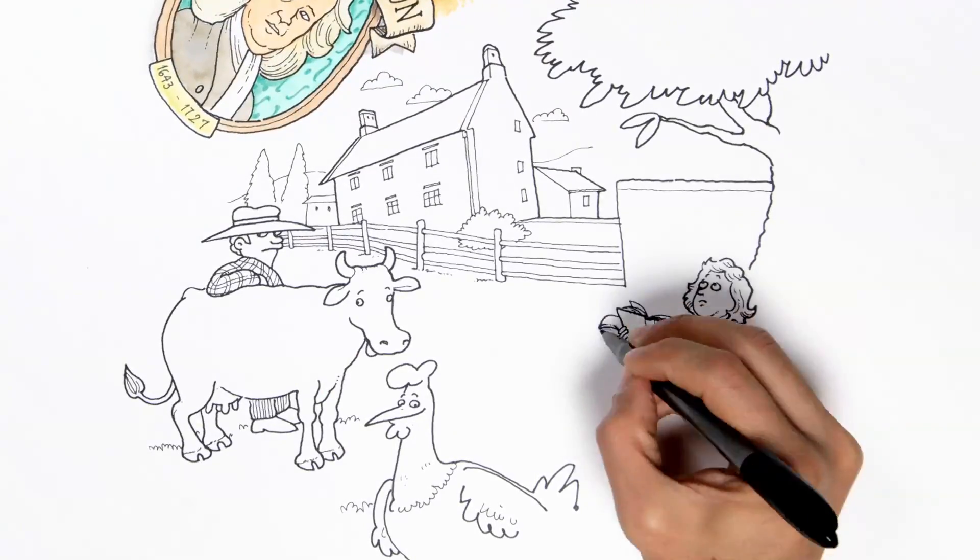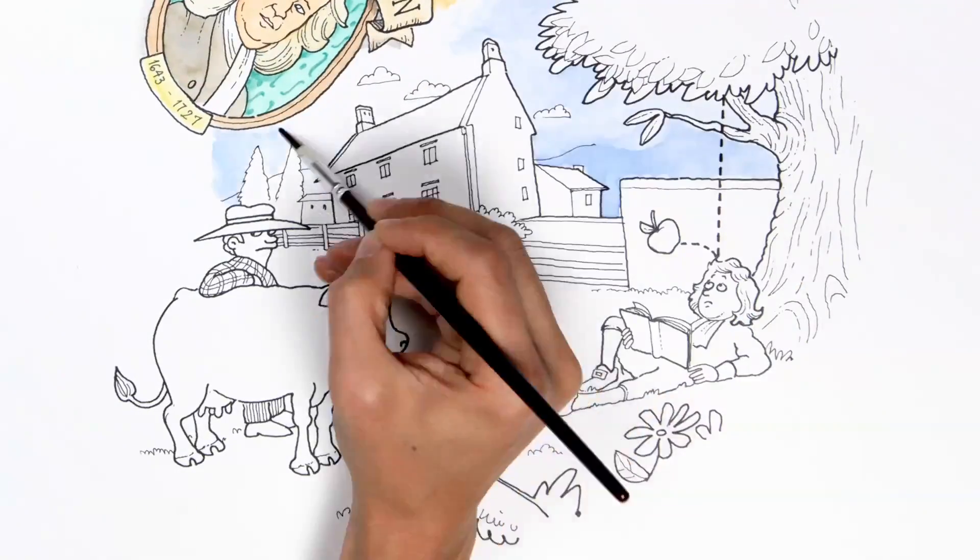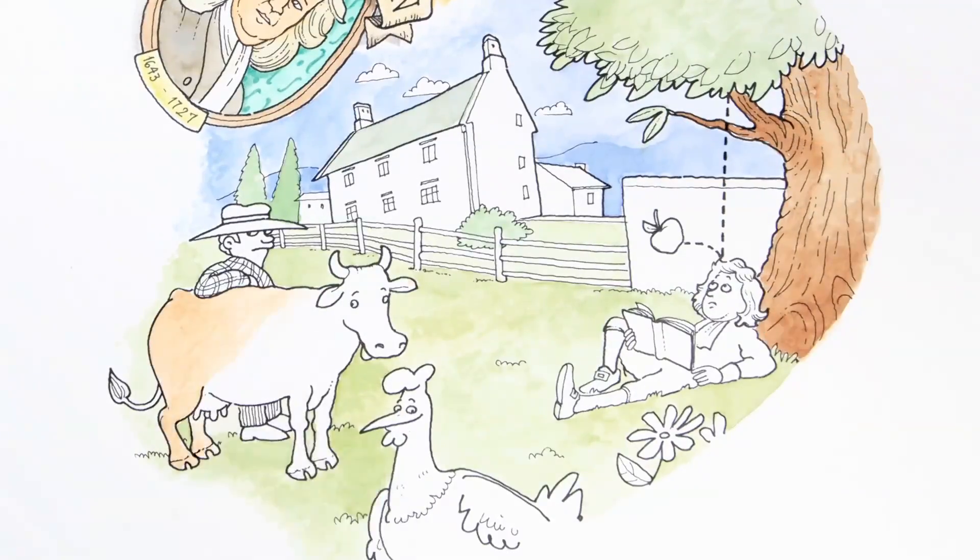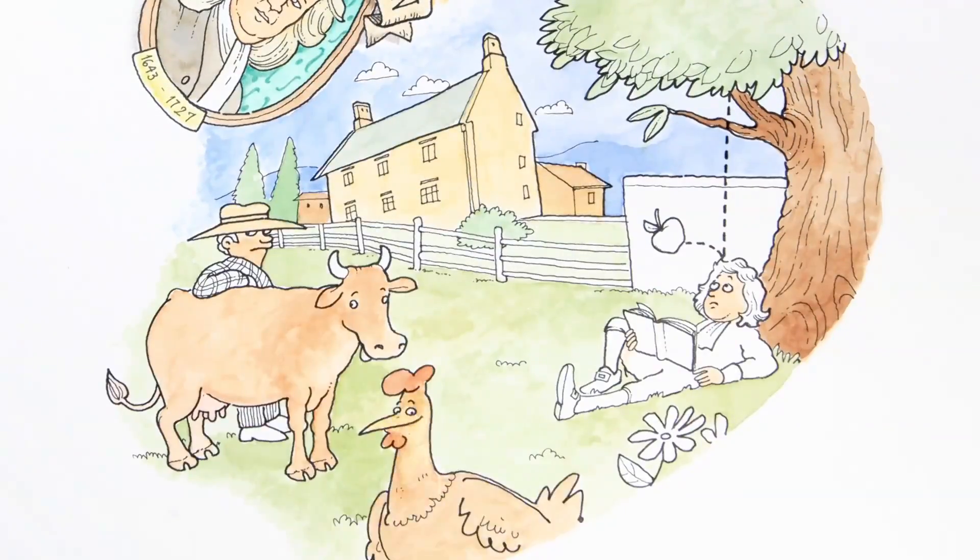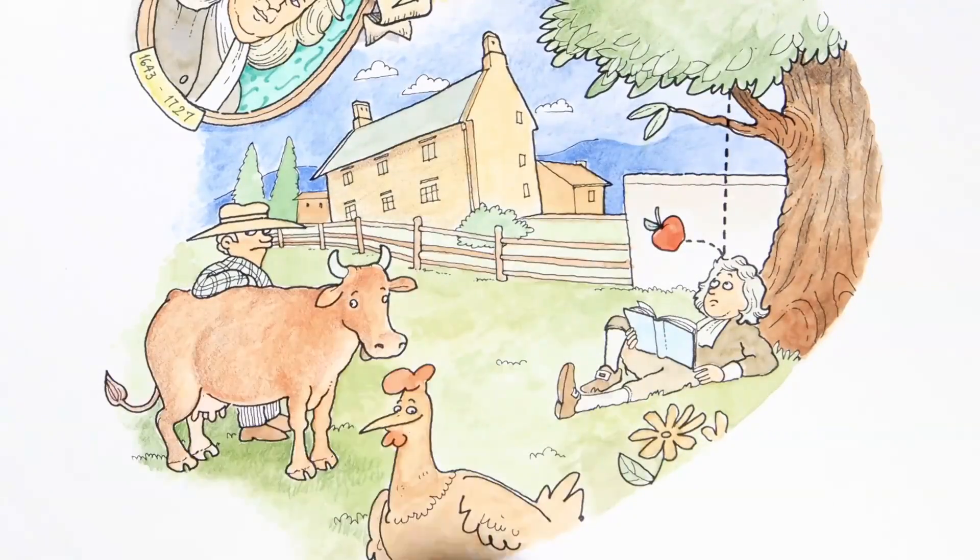It seems this forced retreat yielded good fruit. According to the legend, an apple fell on his head and finally he understood everything. This story probably never happened, but the most important part of it was what he concluded after a lot of studying.